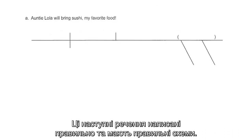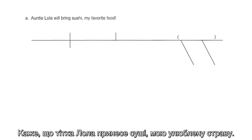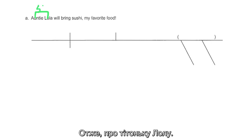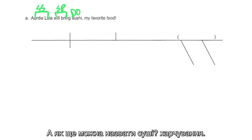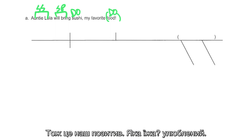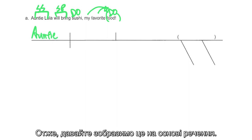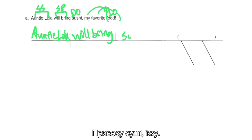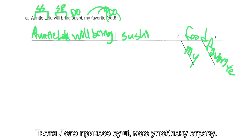These next sentences are written correctly and have correct diagram frames — go ahead and complete these. 'Aunt Lola will bring sushi, my favorite food.' Aunt Lola is who it's about. What will she do? She will bring. She will bring what? Sushi. What's another word for sushi? Food — so that's our appositive. What kind of food? Favorite. Which food? My. Let's diagram: will bring sushi, food — with the modifiers underneath the appositive, which is what we're looking for.